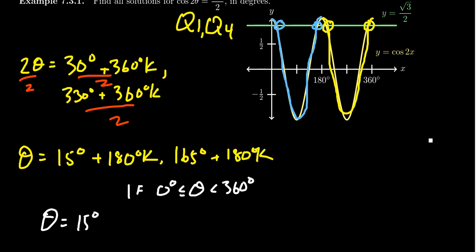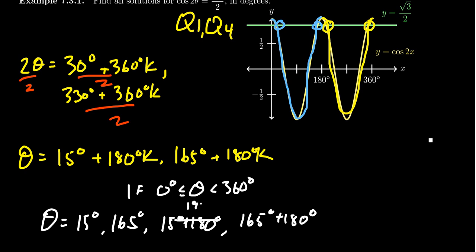So if we had changed the problem and we're like, we don't want just any solutions. We just want that theta is between 0 degrees but less than 360 degrees. So if that was the stipulation, how does that change things? Well, you get 15 degrees, you get 165 degrees, but then you get the next one. The next one would be 15 degrees plus 180. You also get 165 degrees plus 180 because that second period would show up before 360. And so we have to compensate for those as well. So you get 15 degrees plus 180 degrees, which is 195. And then you get 165 plus 180 degrees, which is 345.